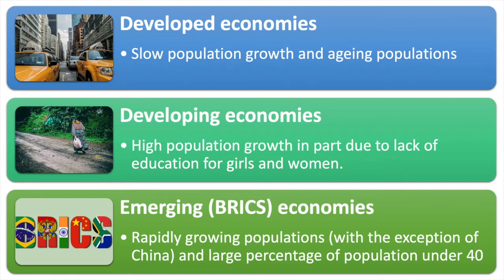The population of developed economies tends to be growing slowly. This is in large part due to couples having fewer children than before. In the US, the ratio of children born per woman is 1.87. The population is said to be aging, meaning the median age in the country is rising due to longer life expectancy and lower fertility rates.